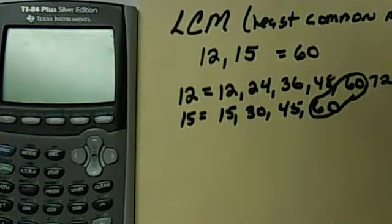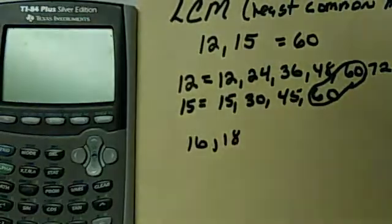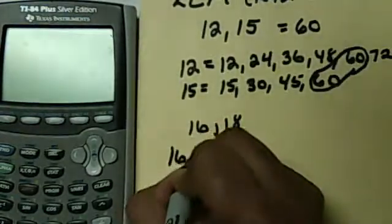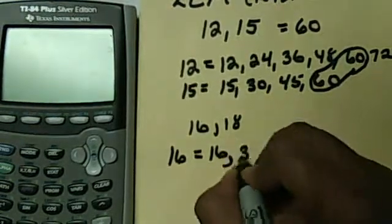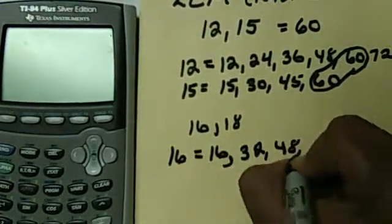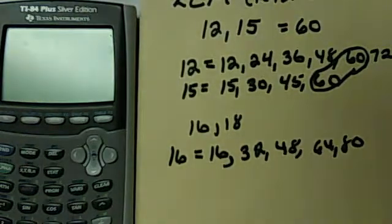But what if I wanted to find the LCM between 16 and 18? What is that? And then I start off 16. Then I have 16, 32, 48, 64, 80. I'm going to stop right there.